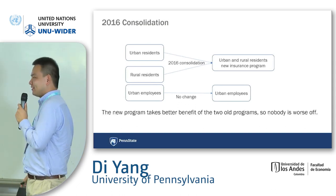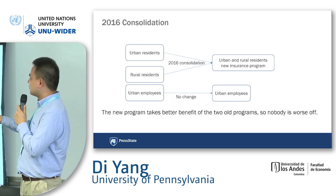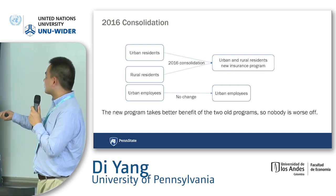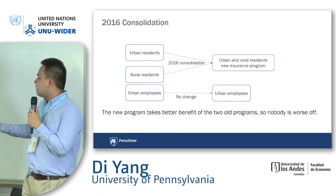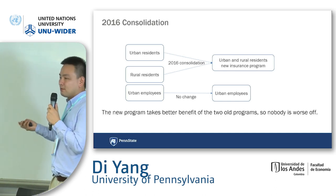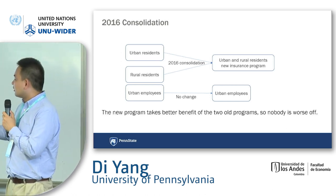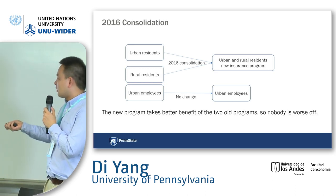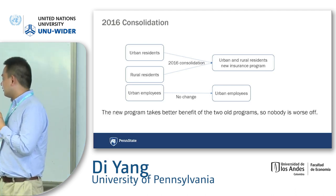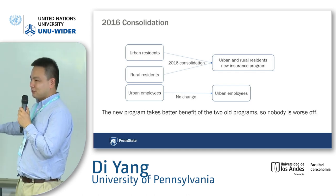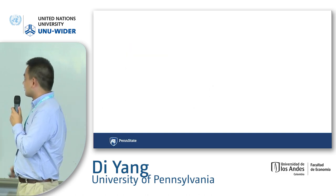So in 2016, there was a consolidation of two programs. The urban resident insurance and the rural resident insurance were consolidated into a new program. The new program takes the better benefits from the two old programs, so nobody is worse off. As for urban employees, their insurance program was not impacted — they're not better or worse off. This is actually a good situation for the study, because I can use urban employees as the control group.